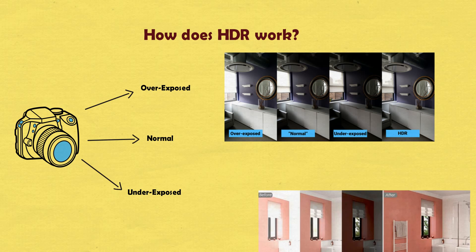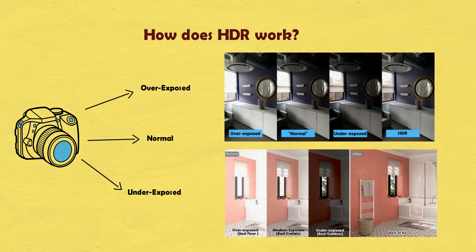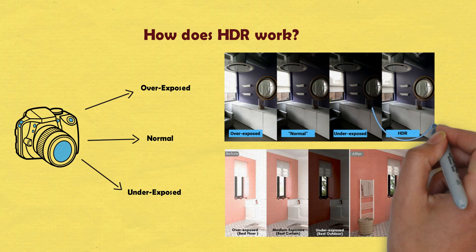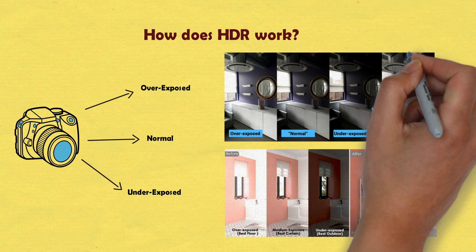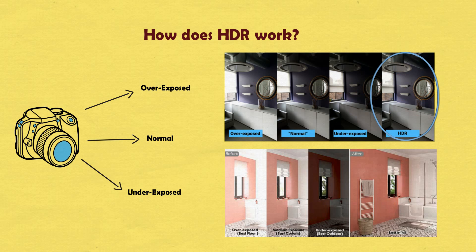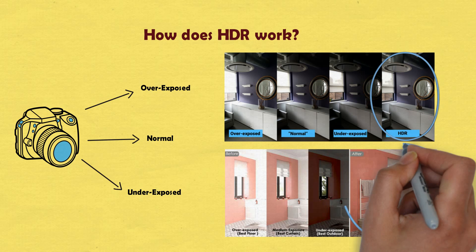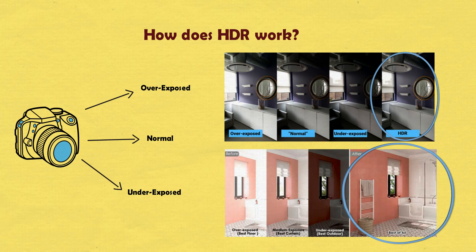Now with the help of software, these photographs are then combined. What will happen is that you will see an optimized image, most likely as you would see with your naked eye. In the final processed image you can see great details in all areas of the picture — the bright and the dark areas will be evenly lit.